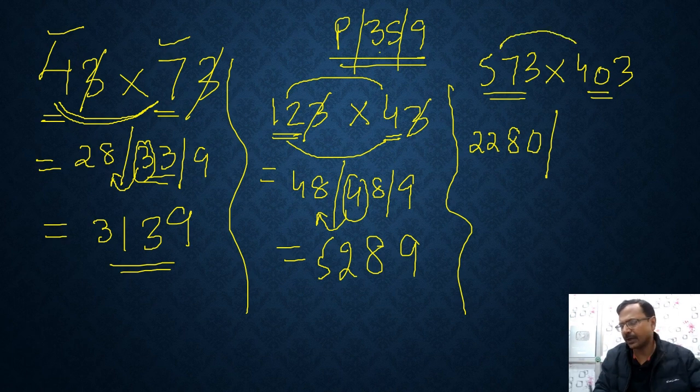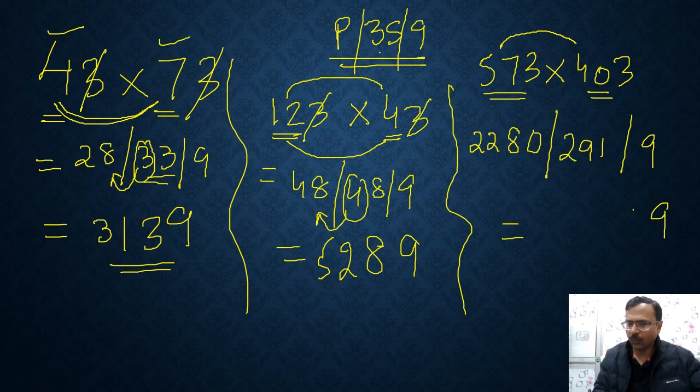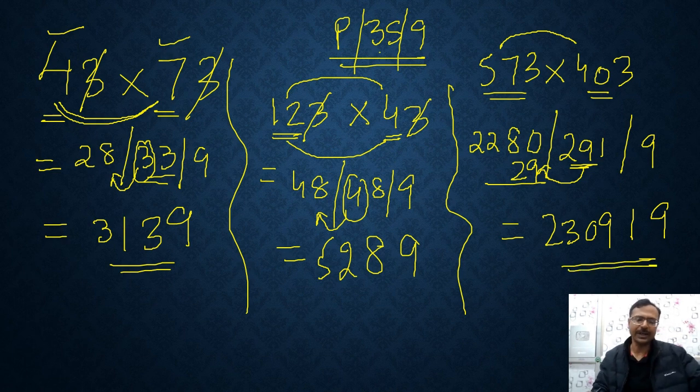And 57 plus 40 is 97. And 3 times that. 97 is 3 less than 100. So if you do 3 times, it will be 9 less than 300. So 291. And finally, we have the 9. So what is the answer? 9, 1 and this 29 carried over. 29. So that makes it 2309. Okay. 2309. And the answer for the question is 230919.